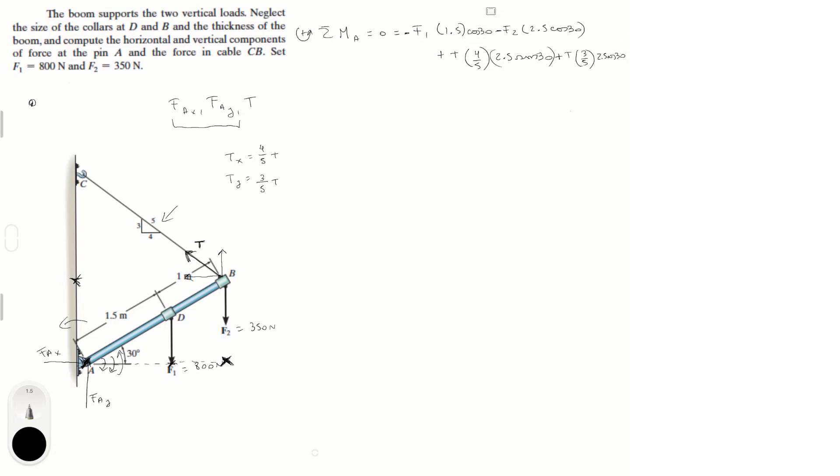So this is our equation. We have f1 at 800, we have f2 at 350, and the only variable here that we have is T. So let's solve it. So when you plug in the values, the first term should be minus 1039.23. Second term should be 757.77.